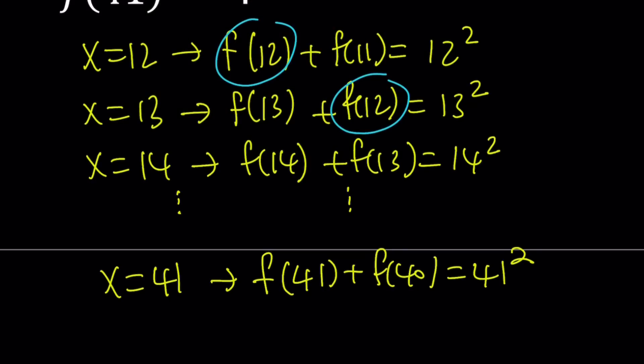But there's a lot of extra terms, such as this one. For example, I have f of 12 here and here, and I need to get rid of them. So if I just add up these equations, it's not going to help me because they're not going to cancel out. So I have to work in such a way that I can cancel out all the terms except for f of 11 and f of 41. So how can I do that? We're going to be using an alternating sum here.